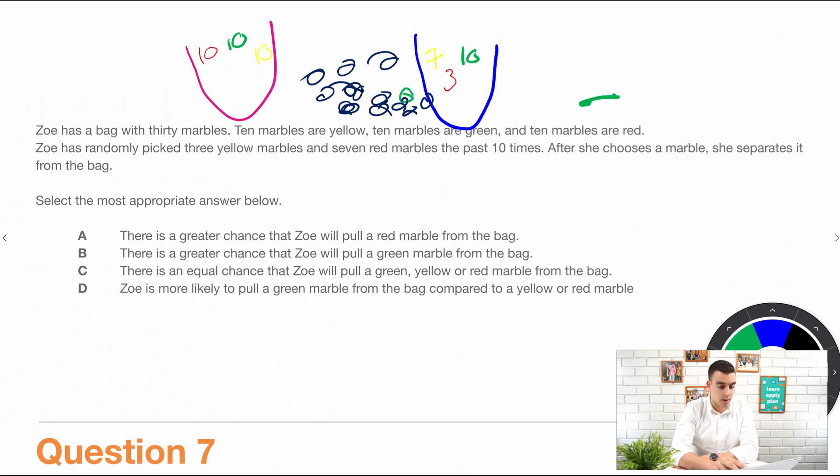There is a greater chance that Zoe will pull a red marble from the bag. So that's incorrect because there's only three in the bag left. There is a greater chance that Zoe will pull a green marble from the bag. So that's correct.